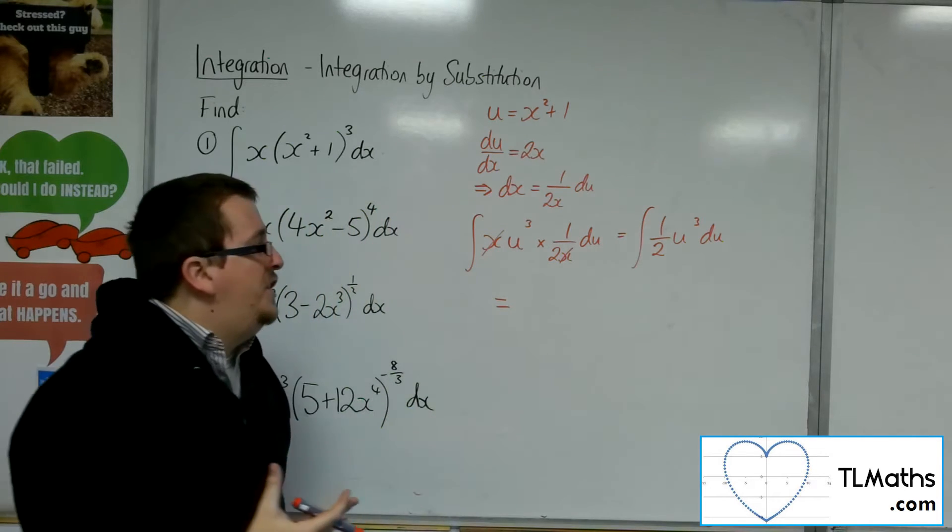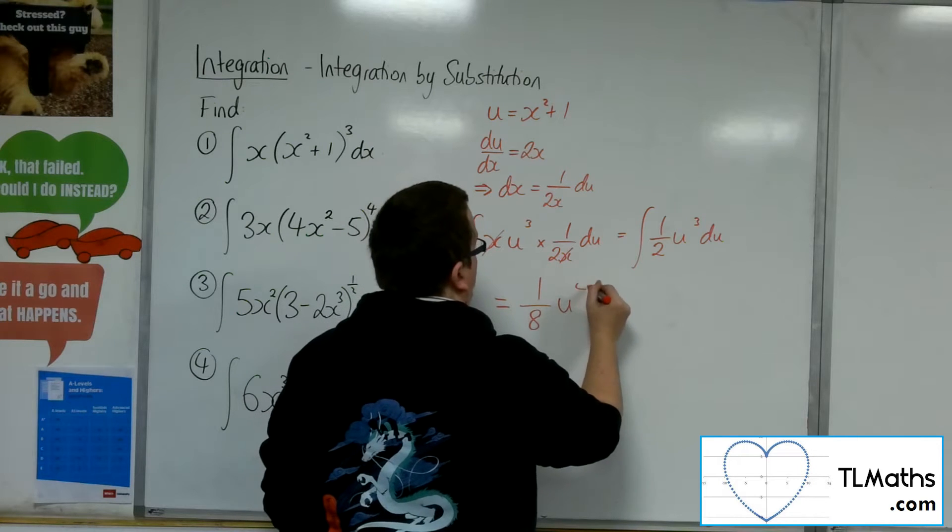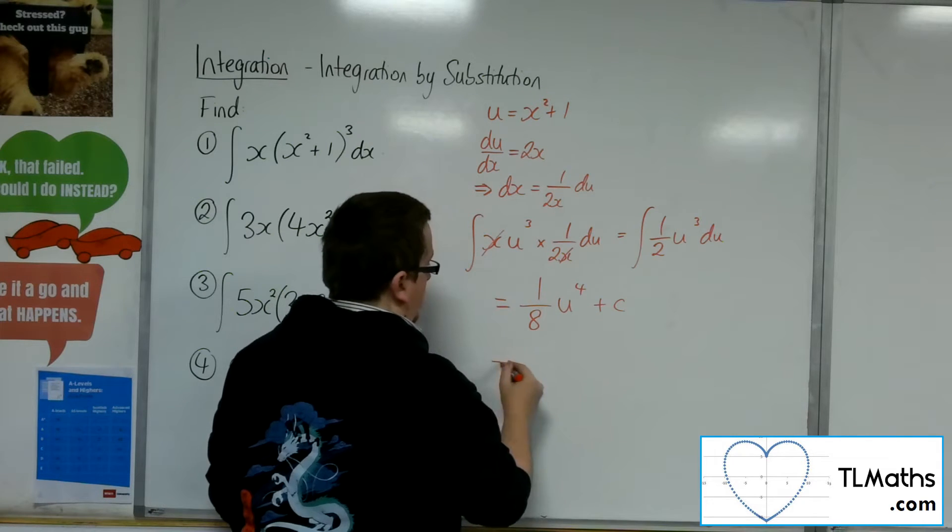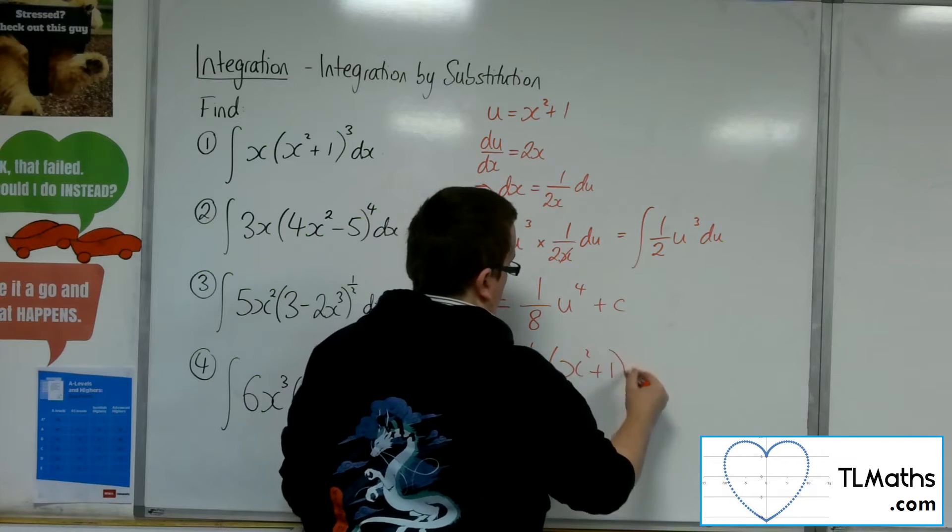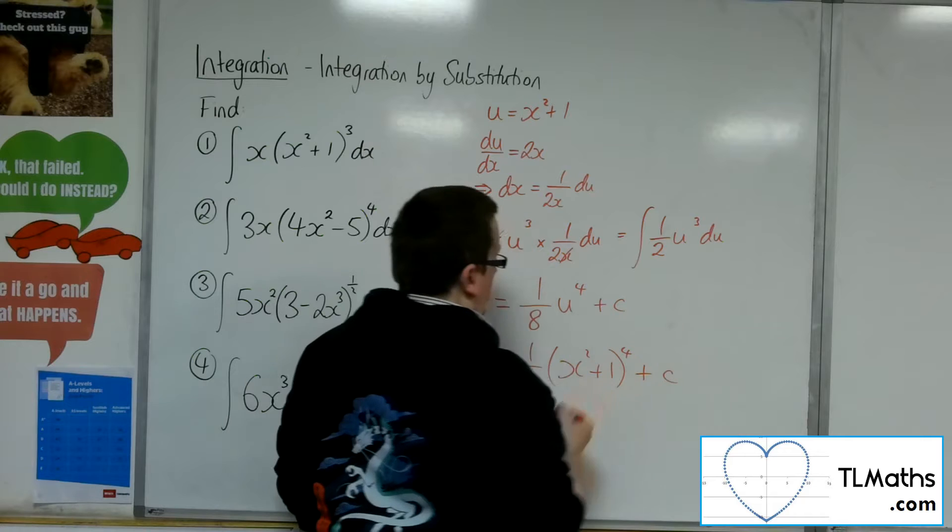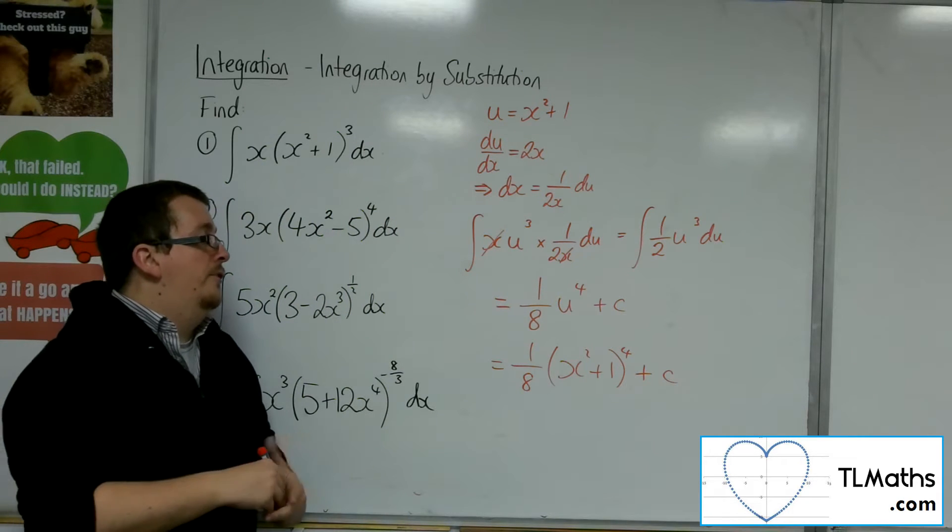Add 1 to the power divided by the new power. So I'd have 1 over 8 u to the 4 plus a constant c. And then pop the u back in, so x squared plus 1, like so. That's my first answer.